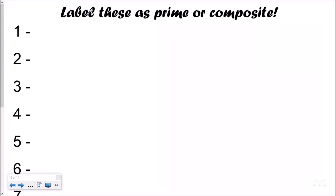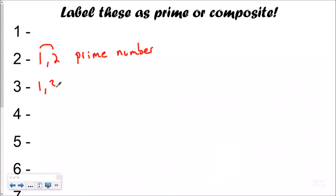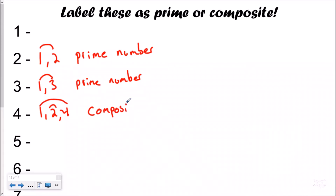I made a list of numbers and we're going to label these as prime or composite. We're going to skip one for now and come back to it. I'm going to make the factor rainbow and write it down here to save some time. If you're confused about how I found the factors, please check out our other video on factors. For two, the only way I can make it is one times two or two times one, so two is a prime number because it only has exactly two factors. Three is also a prime number because the only way to do it is one times three or three times one — only two numbers in its factor rainbow.